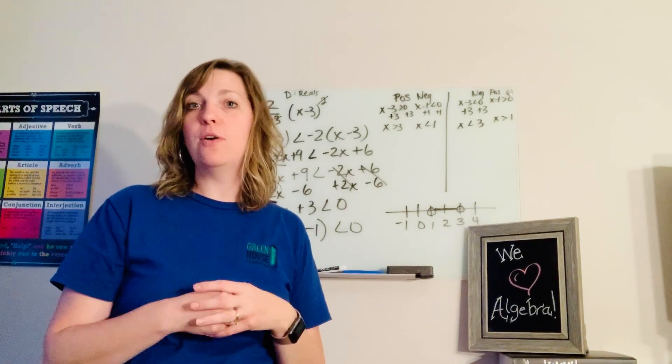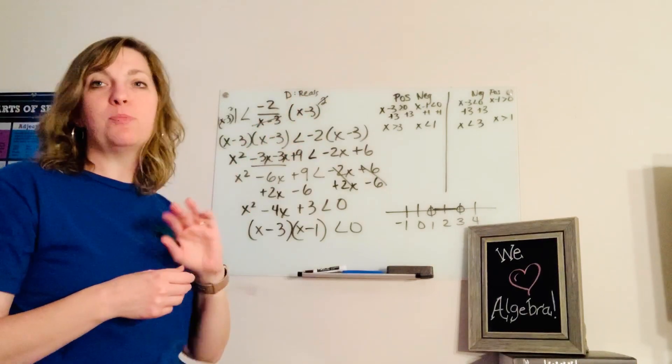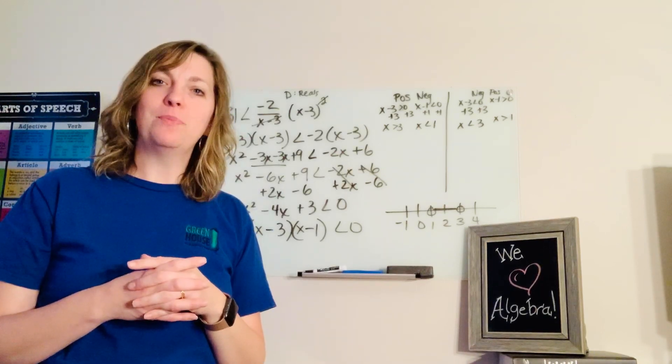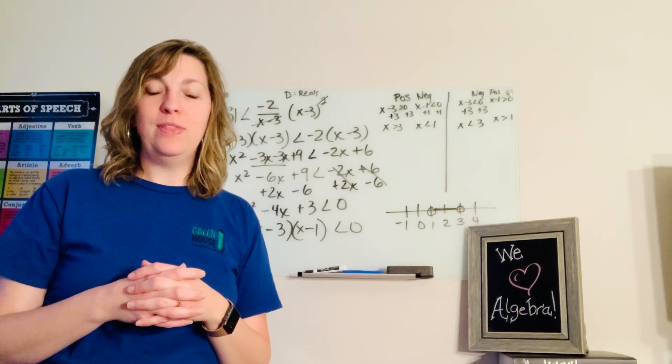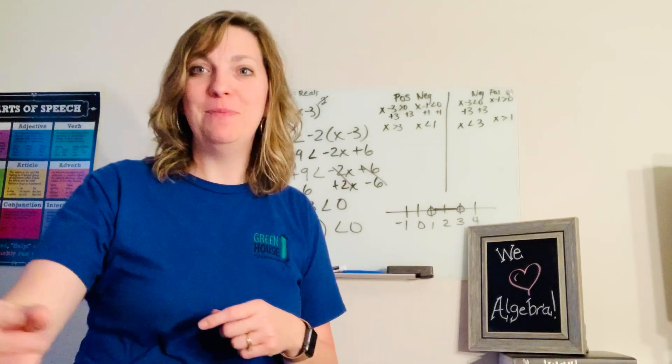I've got x squared minus 6x plus 9 is less than negative 2x plus 6. Now I'm going to combine terms and work it together. x squared minus 6x plus 9 is less than negative 2x plus 6. The dilemma is I have variables on both sides, so let's add 2x and subtract 6 from both sides. That gives me x squared minus 4x plus 3 is less than 0.